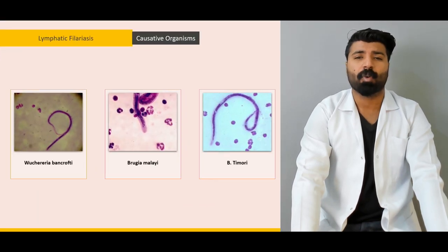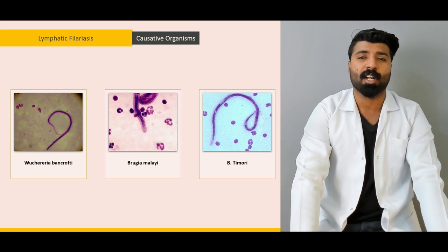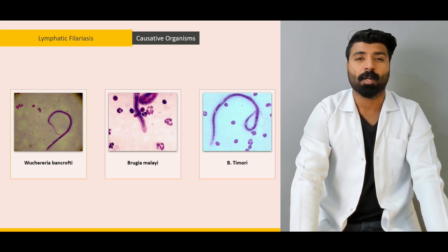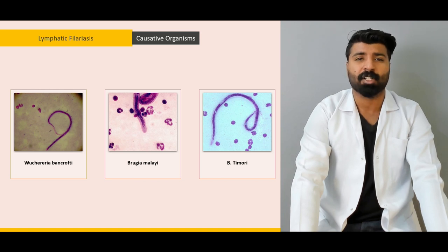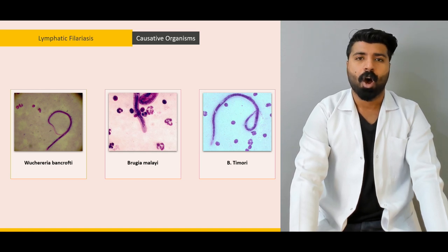Next, we're going to talk about what causative organisms are present — what are the causative organisms of lymphatic filariasis. We're going to talk about in detail these three causative organisms, these three causative parasites.